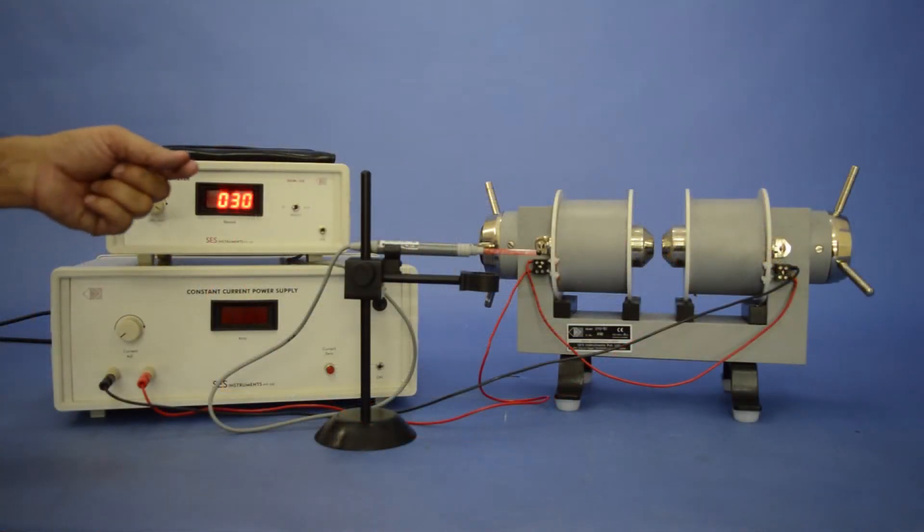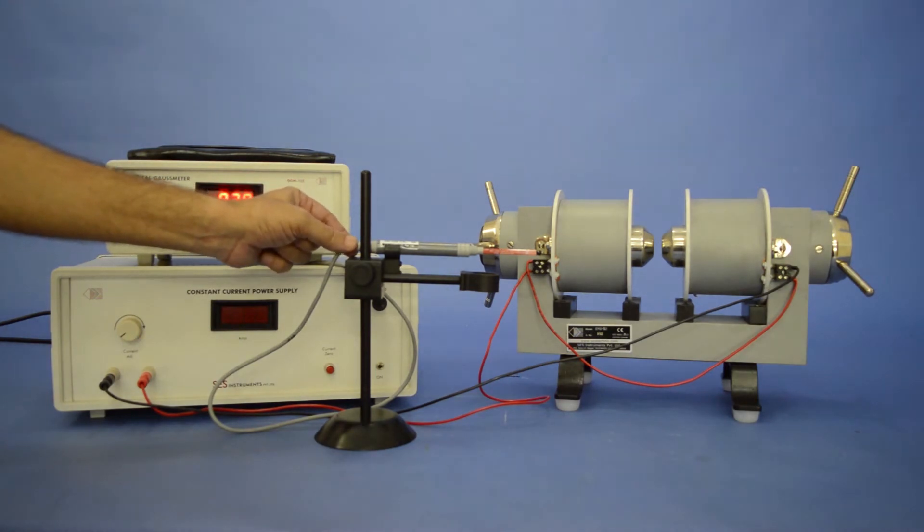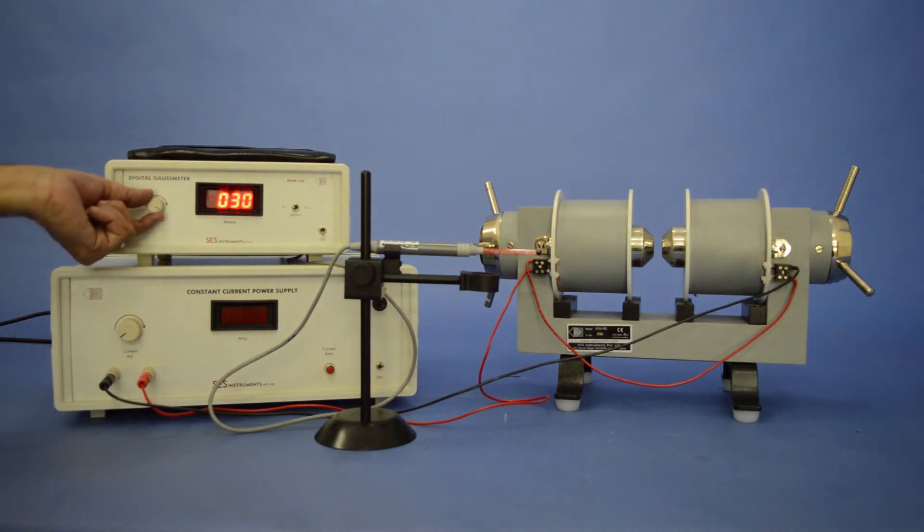Fix the Hall probe gallium arsenide of the gauss meter in the multi-purpose stand and set zero at x1 range with the zero adjustment knob, when probe is outside the magnetic field.